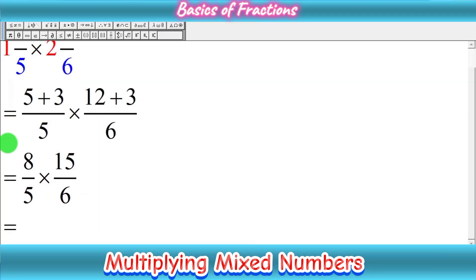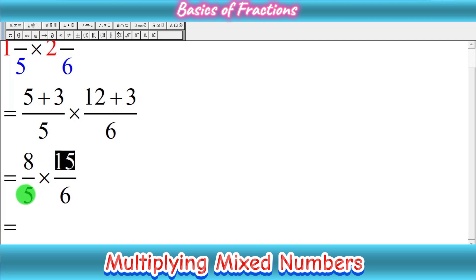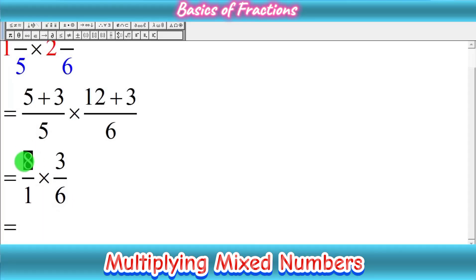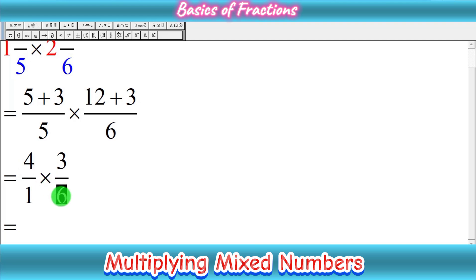Now we have converted both mixed numbers into improper fractions. We check for cancellations where numbers share common factors. As you can see, 5 and 15 have a greatest common factor of 5. Dividing both by 5: 5 divided by 5 gives 1, and 15 divided by 5 gives 3. Similarly, 8 and 6 have a greatest common factor of 2. Dividing both by 2: 8 divided by 2 gives 4, and 6 divided by 2 gives 3.